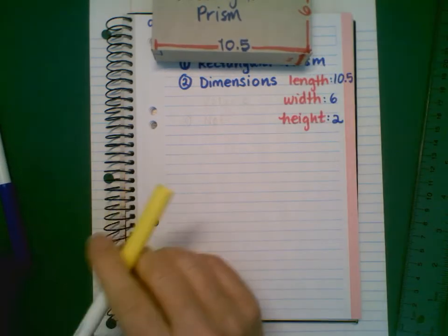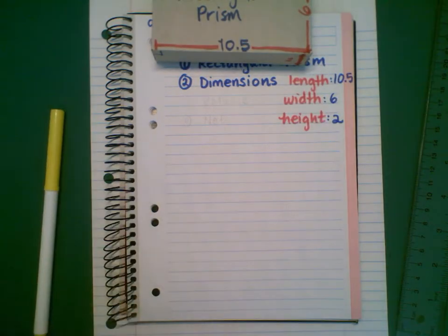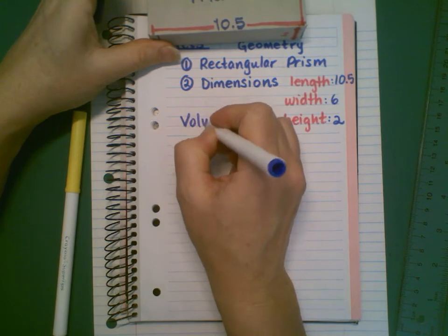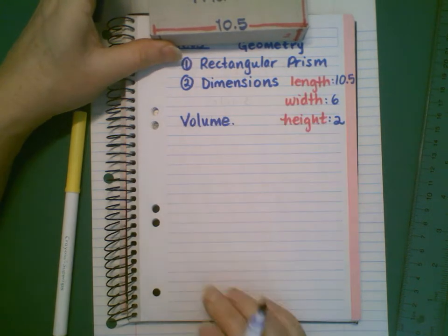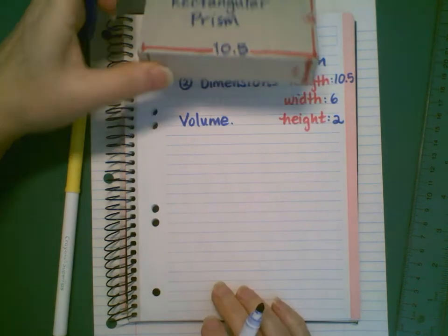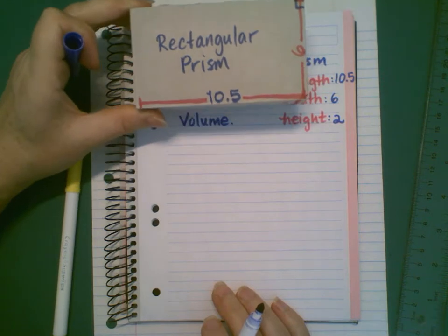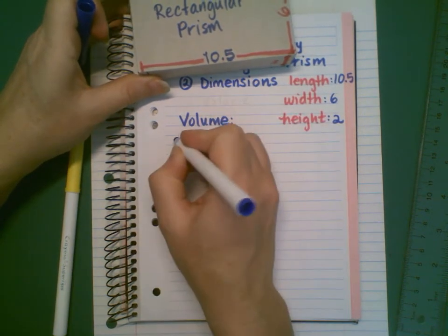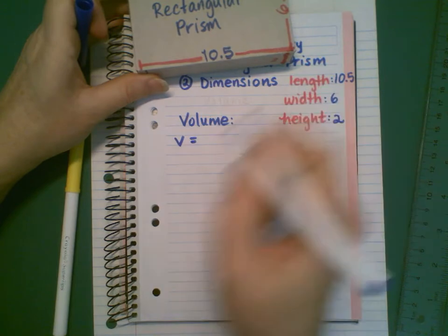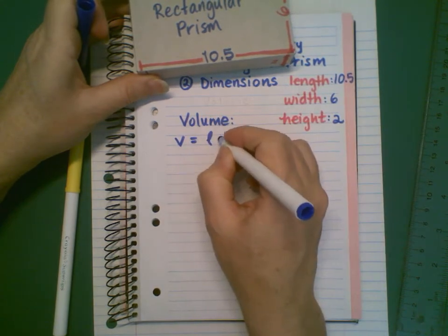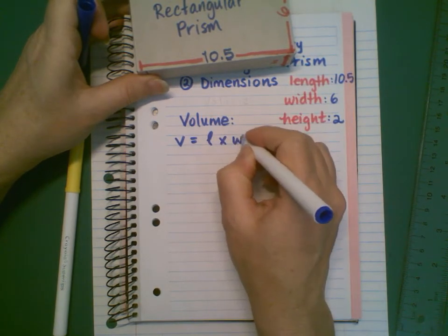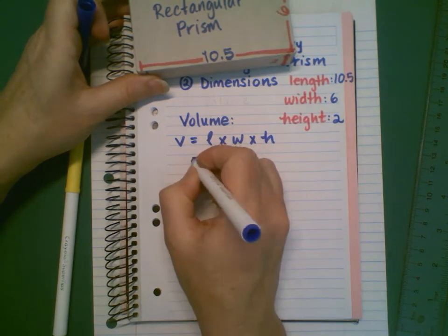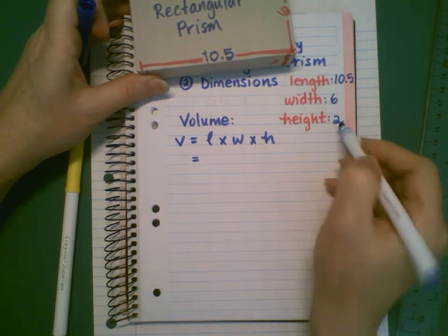So if I was being asked in a problem to find the volume — in other words, the space contained inside this box — I would need to use the following formula: length times width times height. So those three measurements.